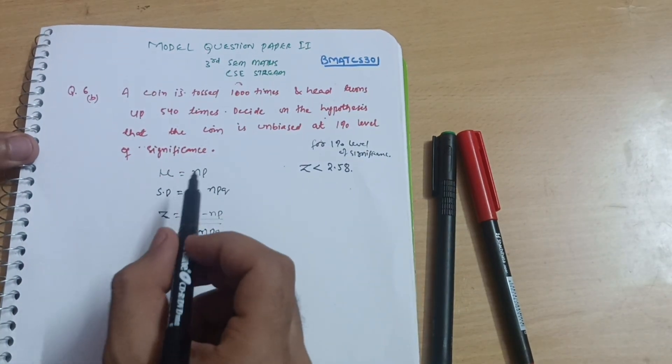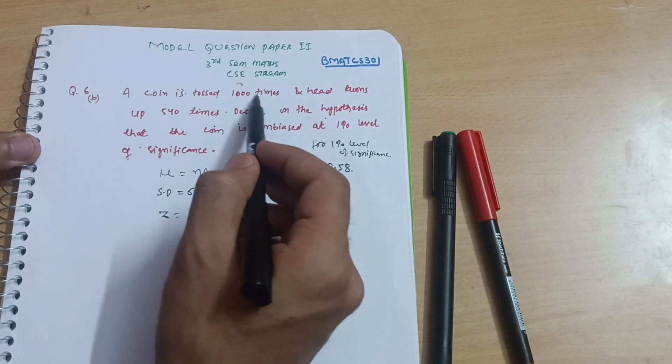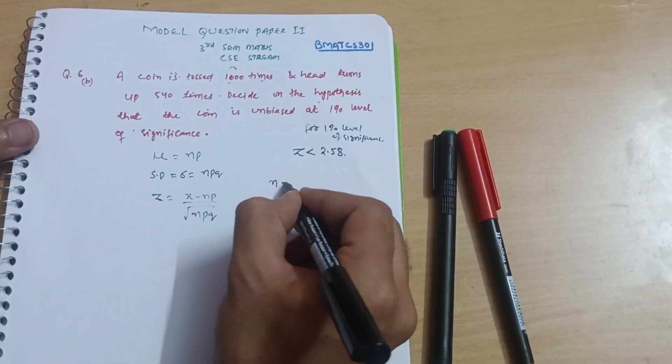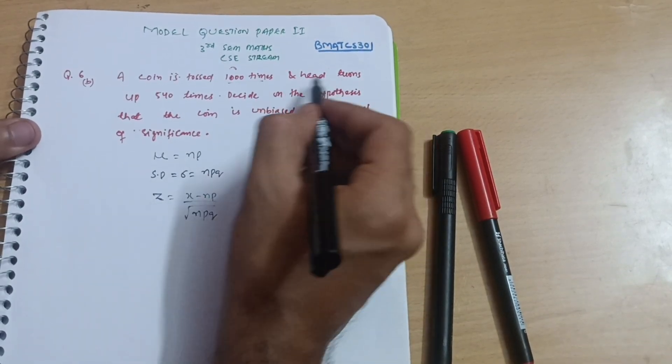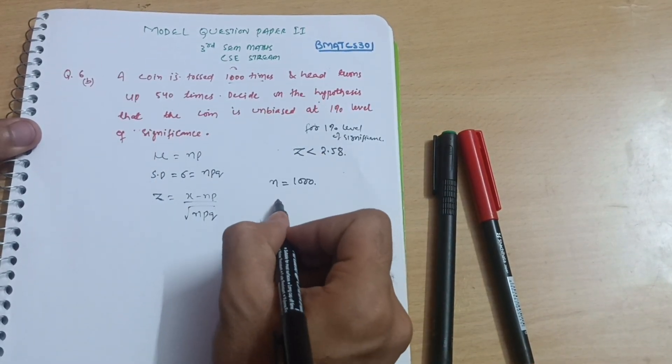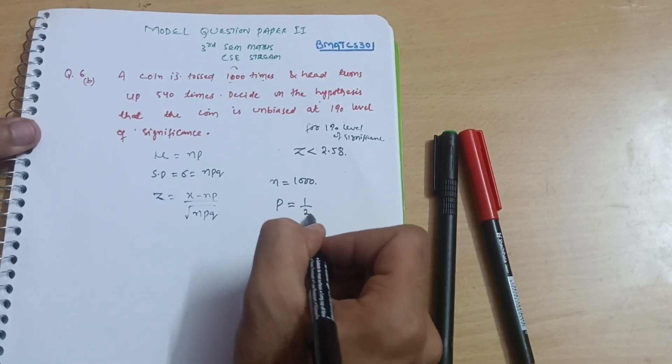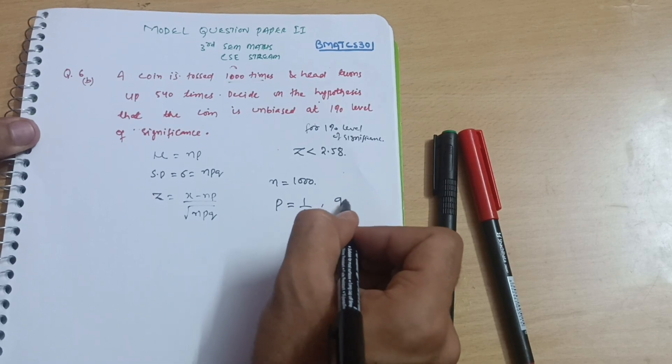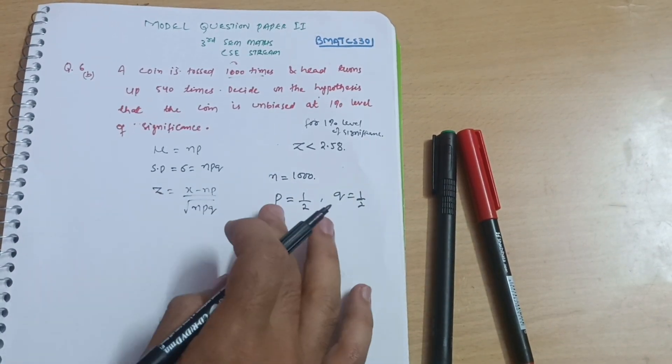It is given in the problem that it's thousand times, so n equals 1000. Head turns up 540 times. As you already know, what is the probability of getting heads in a coin? Obviously it's 50 percent, so 1 upon 2 is the probability. Probability of not head, meaning probability of tail, is also 1 by 2.